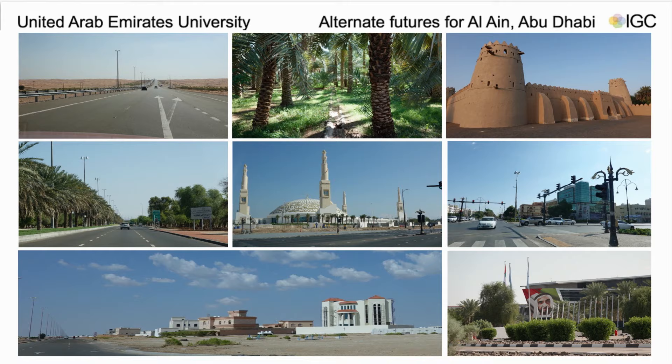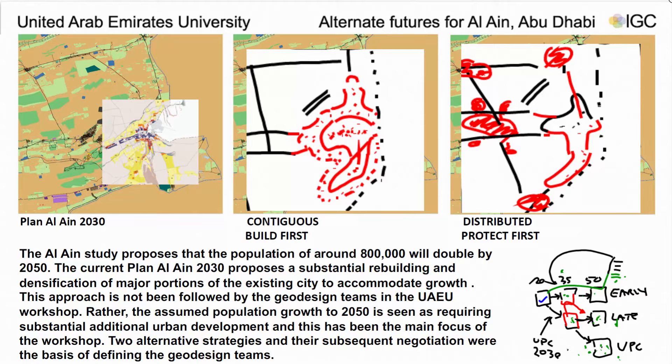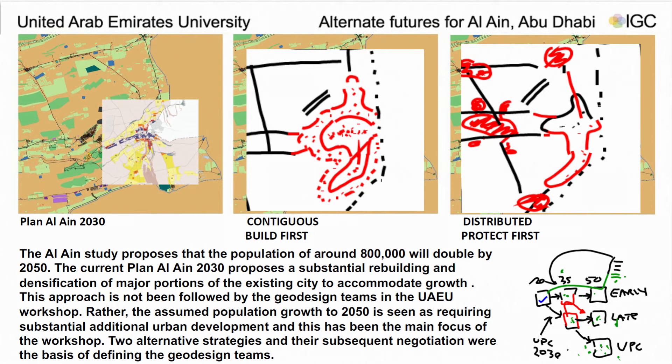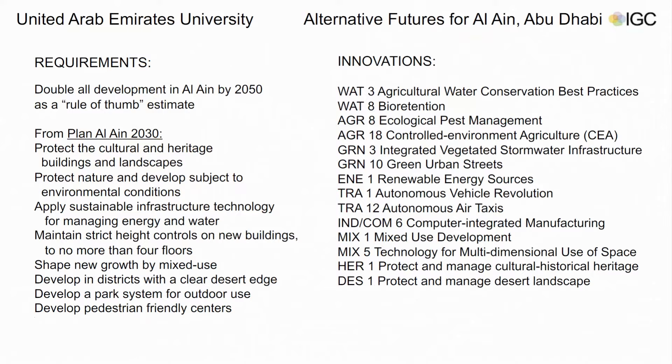Our study proposed that the population of Al Ain is going to be doubled by 2050 to almost 1 million people. The current plan that Al Ain municipality has for 2030 proposes substantial rebuilding. We did not follow this approach; rather, we assumed that population growth in 2050 requires substantial additional urban development planning. These are the three plans: Plan A, 2030 contiguous build, and distributed and protected alternatives.